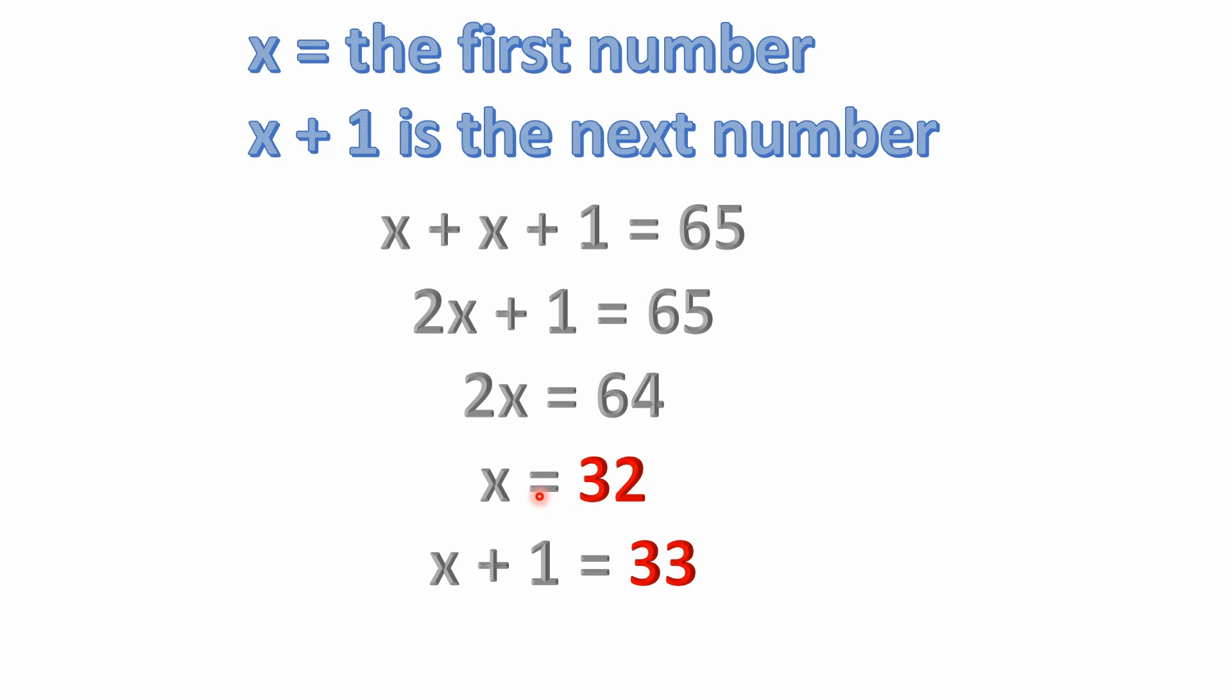So if we want to write out an equation, we would have x plus x plus one equals 65. Remember, x is the first number, and then the next number after that would be x plus one. So x plus x plus one equals 65.